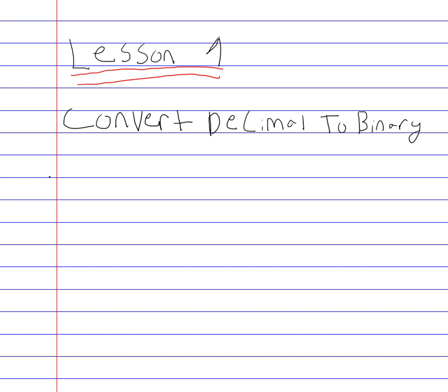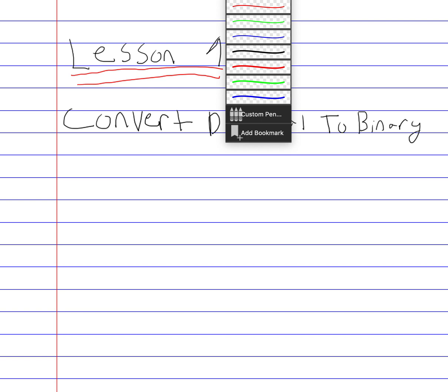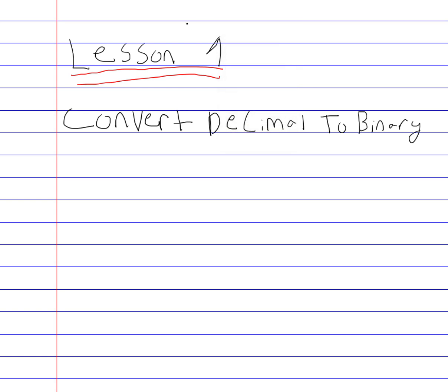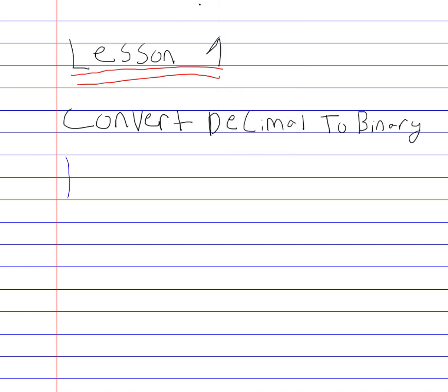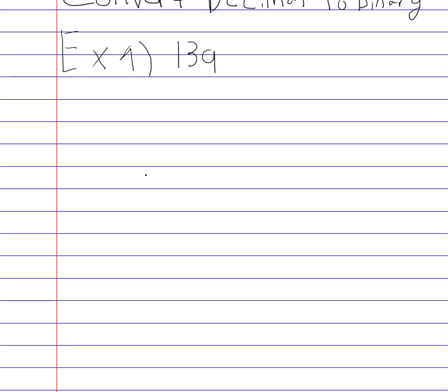So in order to convert decimal to binary, it's actually a very simple process. So we're going to start with example one. Example one, let's say you were told to convert a decimal number of 139. So you're given this question and it says convert 139 into a binary number, how would you do this? So this process is actually very simple, we're going to start with a method that I like to call the ladder method.